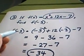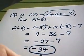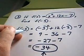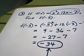f of negative 3 is equal to negative 34. This is technically the answer. Negative 3 is your input. Negative 34 is your output.